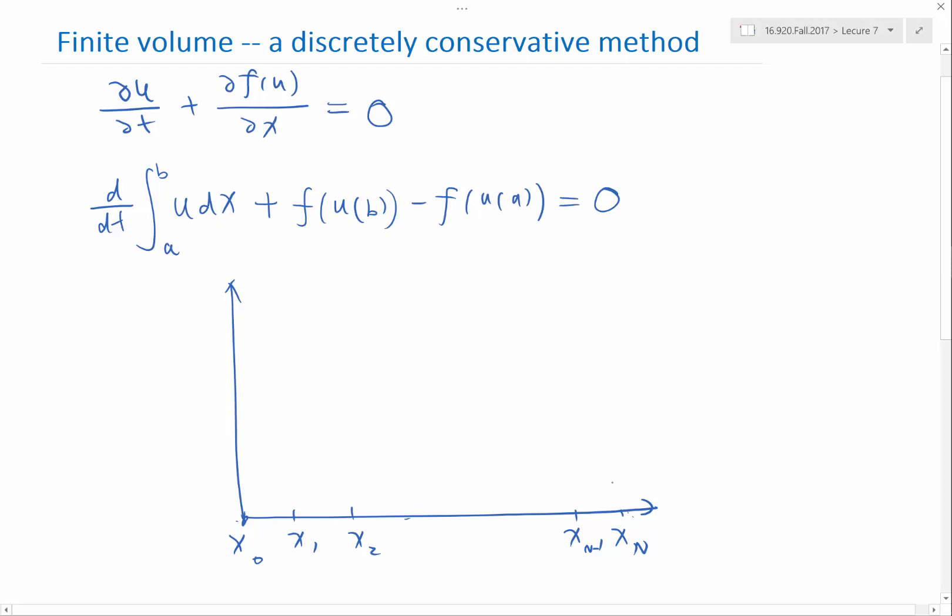But finite volume does not store the value at the grid points; it stores the average value over the intervals. If I know the length of the interval, I'm storing the area below the function of each interval.